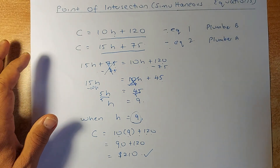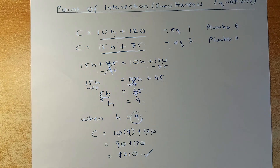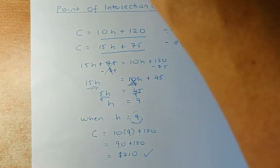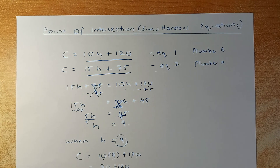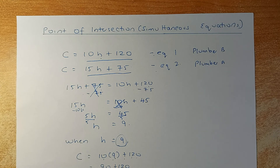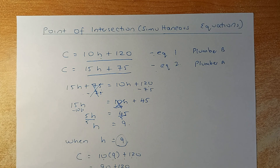Hopefully this video has helped you understand the four skills required. To recap: first, you must be able to draw the graph. Second, find the equation of the graph. Third, use substitution or the line method to find which plumber is cheaper for 8 hours. And to get a merit, use simultaneous equations to find where the two graphs meet. Keep practicing, and if you're not sure, ask for help from your teacher. Thank you and have a good day!